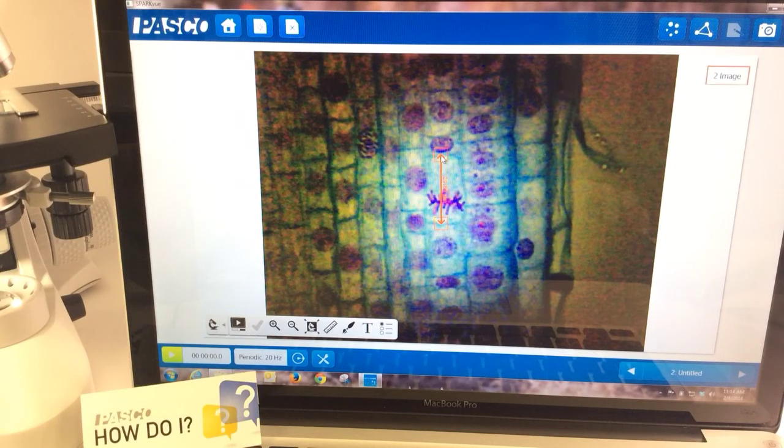So students can continue to add measurements to their diagrams to compare, say, the length of cells that are actively dividing to the length of cells away from the root tip that are not dividing.